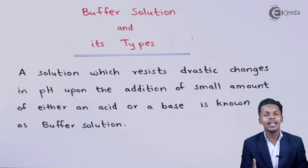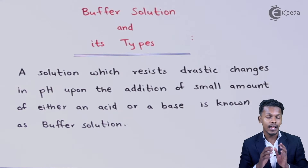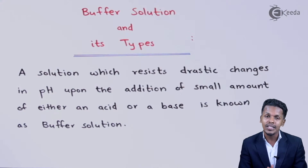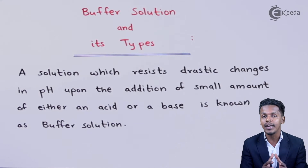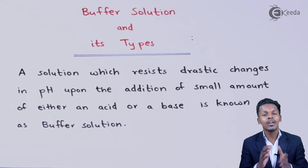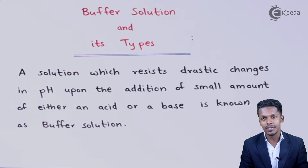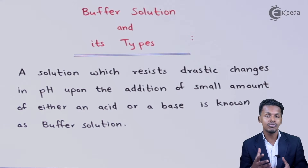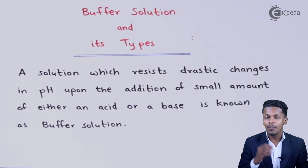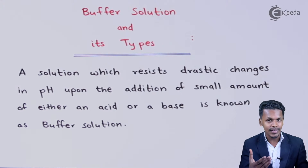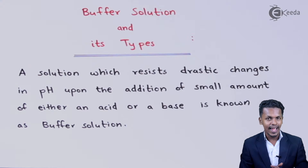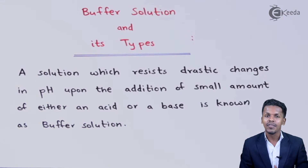But suppose if we have prepared a certain solution where we want to prevent its pH from changing — obviously we should add certain components which would resist the change in pH. Those kinds of solutions are known as buffer solutions. Even if we add a small amount of acid or base, the pH won't change drastically, and that is what a buffer solution is.